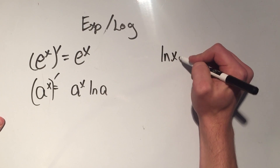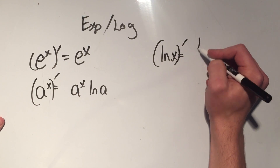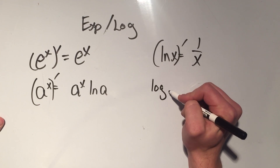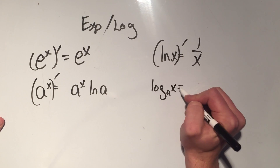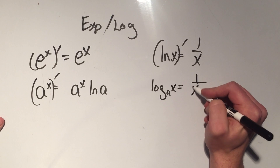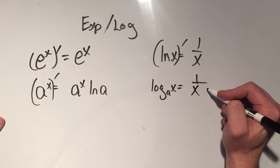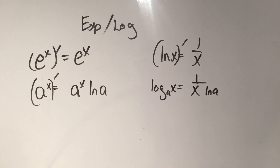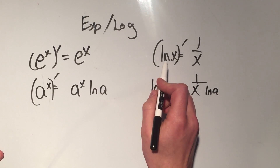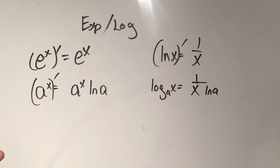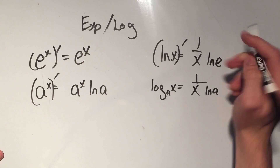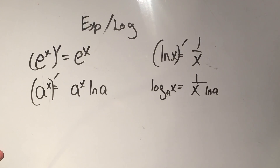The derivative of ln x is 1 over x. More generally, the derivative of log base a of x is 1 over x divided by ln of a. Again, for the natural log case, ln of e is 1, so we never write that.